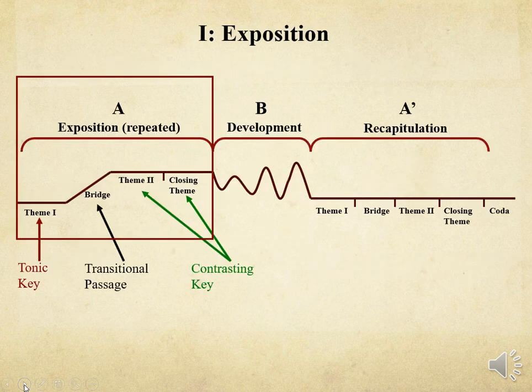Looking at the exposition, the main themes are presented, as well as the key conflict. The first theme establishes the home or tonic key, and this is followed by a bridge which modulates and leads to the presentation of the second theme. The second theme is in a contrasting key, followed by a concluding section that confirms the contrasting key and rounds off the exposition. The entire exposition is then usually repeated before proceeding to the development.